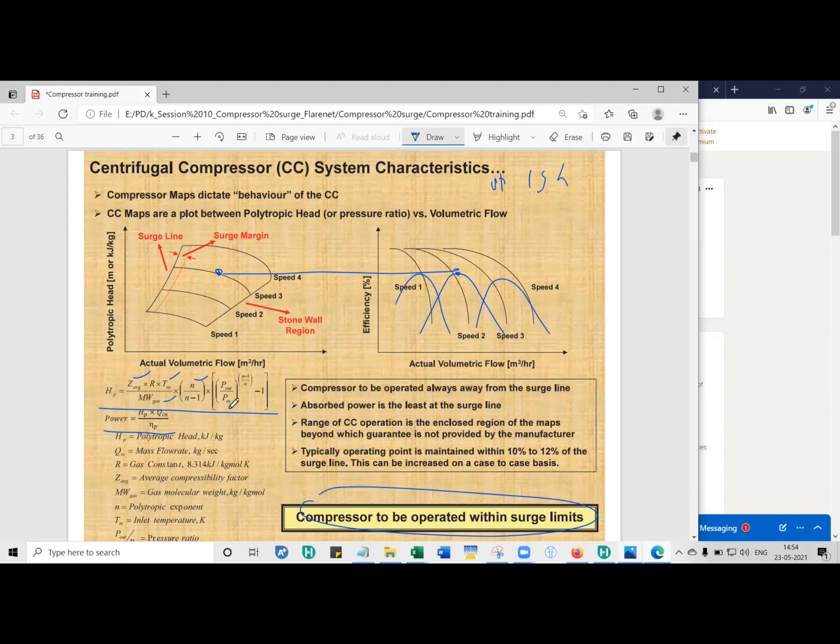Point number two, for a given set of pressure ratio and fluid parameters, for a given set of data, as the molecular weight of the gas increases, the polytropic head decreases and so does the power. And vice versa, so let's say you have methane and you have natural gas. Between methane and natural gas for the same pressure ratio, you need more power to compress methane, whereas natural gas has higher molecular weight, so it takes less power to compress it. So for a given pressure ratio, as the gas gets heavier and heavier, you will need less power to compress it.